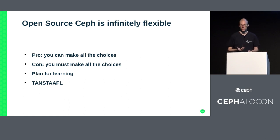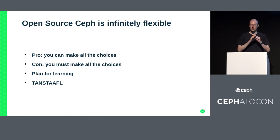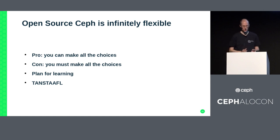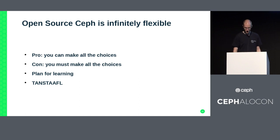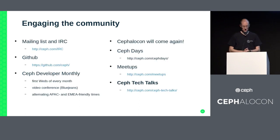Open source Ceph is infinitely flexible - you can do many things with it, it has all the knobs, you can make all the choices and adapt it to your environment. The downside is you have to make all the choices - somebody has to make all those choices for you. Plan for learning when you deploy a system. Plan to adjust what you're doing, and remember there's no such thing as a free lunch - or in this case, a free dinner. Nothing is free. If you want to know more, come talk to us. Thank you for your time and have a lovely evening.